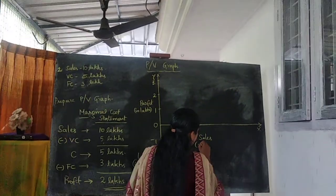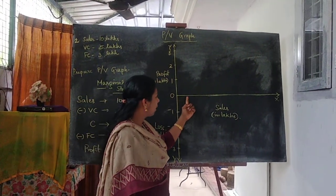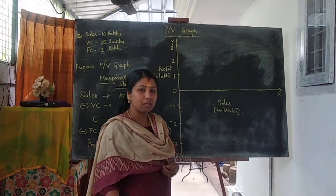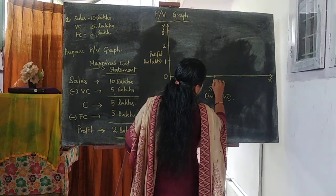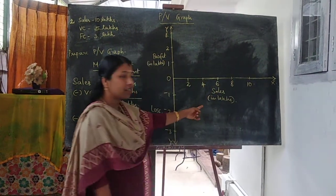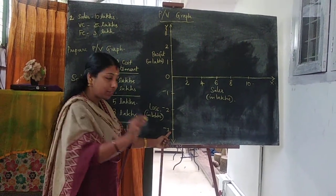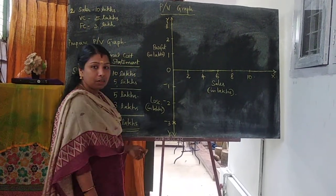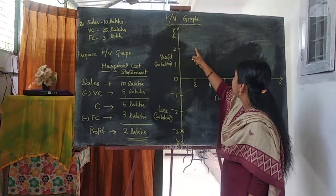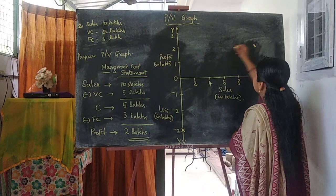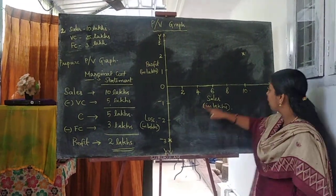The X-axis shows sales in lakhs. Maximum sales is 10 lakhs, so take measurements of 2, 4, 6, 8, and 10 lakhs. When sale is 0, the first point is 3 lakh loss. When output is 10 lakhs, profit is 2 lakhs — this is the second point. Draw a line from negative 3 lakh loss through to 2 lakh profit.